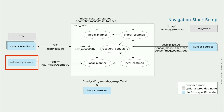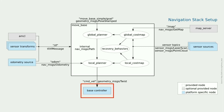Using odometry data, we can estimate where the robot is with respect to its starting position. This includes wheel encoders, IMUs, and visual odometry. This information needs to be published to the navigation stack. Finally, after the navigation stack has done its computations, the base controllers will convert the output of the stack into corresponding motor velocities of the robot.